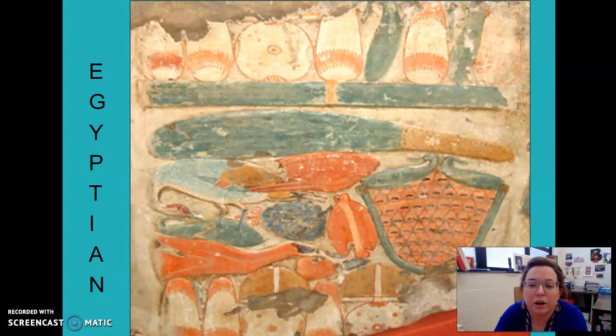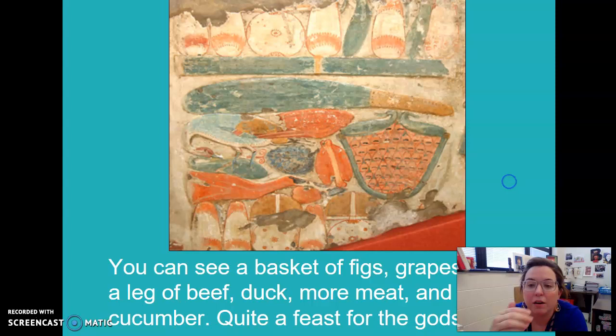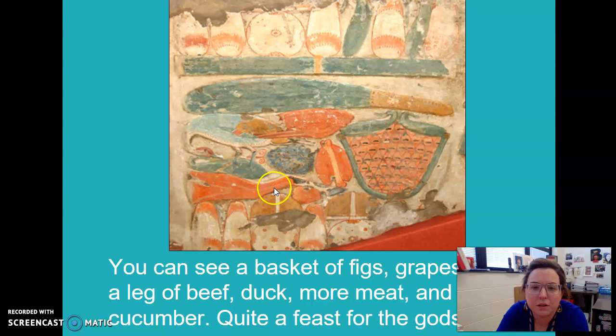Still life started with Egyptians really documenting their offerings to their gods. This is on a wall — kind of like, sort of similar to a cave painting. There's a variety of different offerings: there's a basket of figs right here, there's grapes, bread. This is a leg of beef — you can see the hooves — a duck, more meat, and a cucumber.